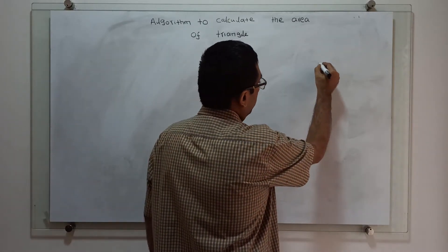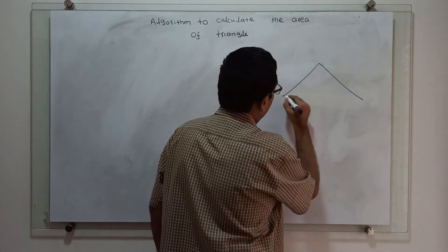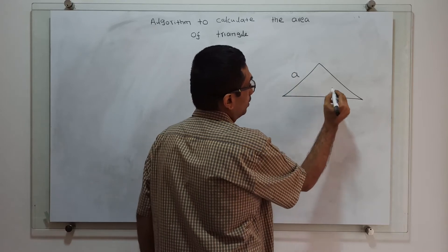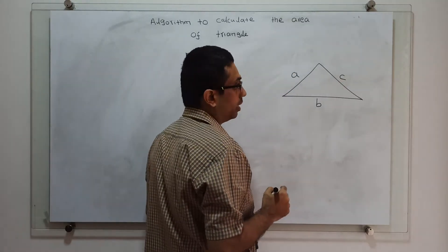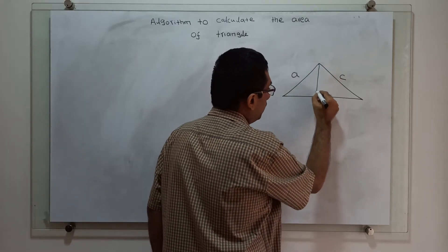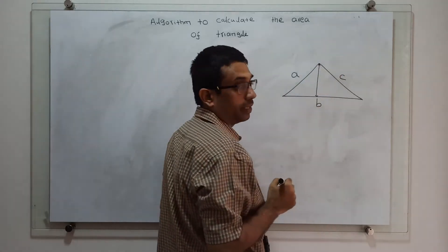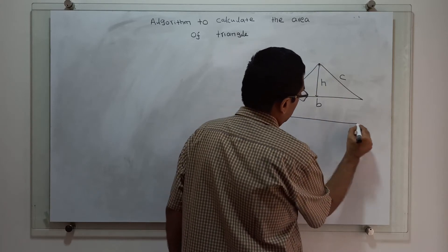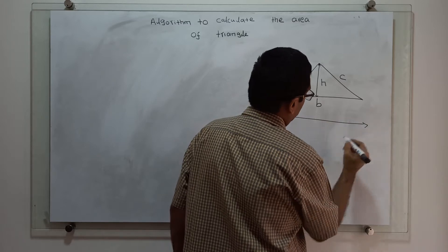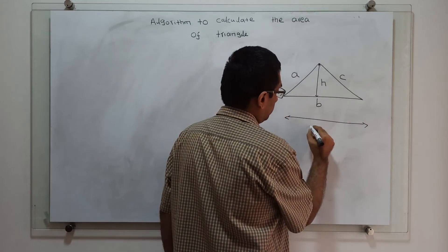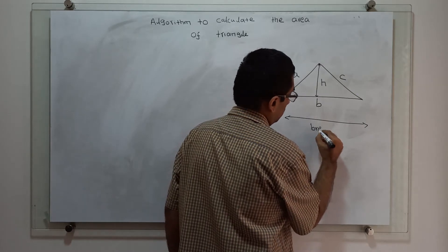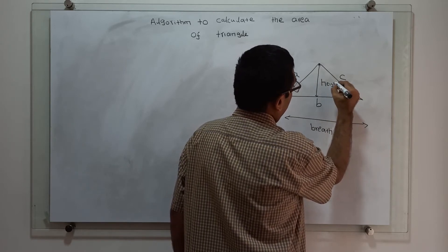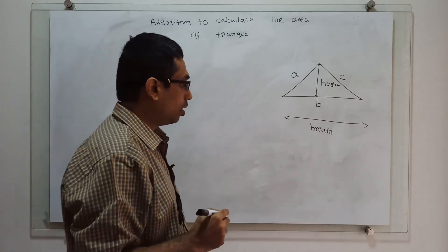So we'll take a triangle which contains three sides a, b, and c. Along with this, the triangle is having a height h and breadth. So the triangle has a height and breadth.